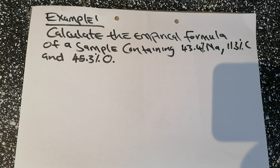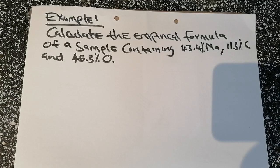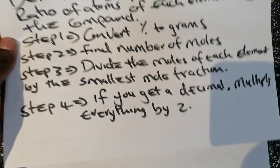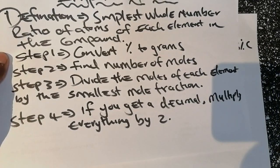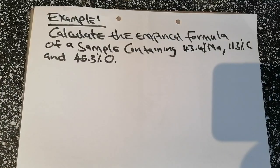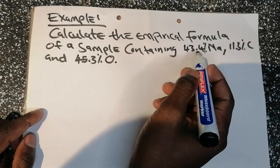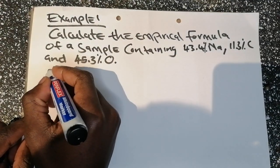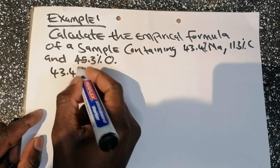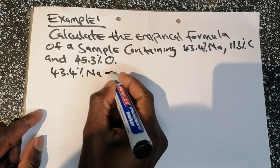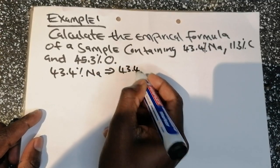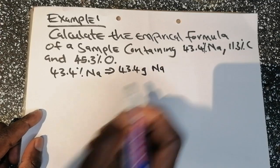The first example says we need to calculate the empirical formula of a sample containing 43.4% sodium, 11.3% carbon, and 45.3% oxygen. Step one: convert percentages to grams. So 43.4% sodium is equivalent to 43.4 grams of sodium.